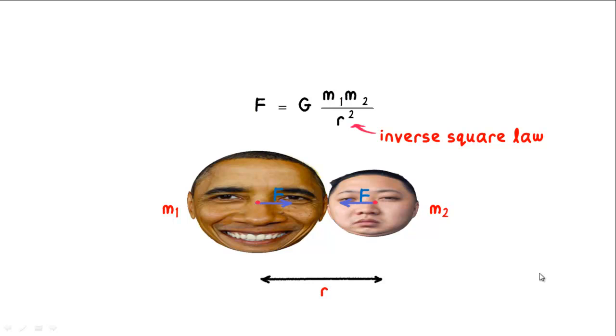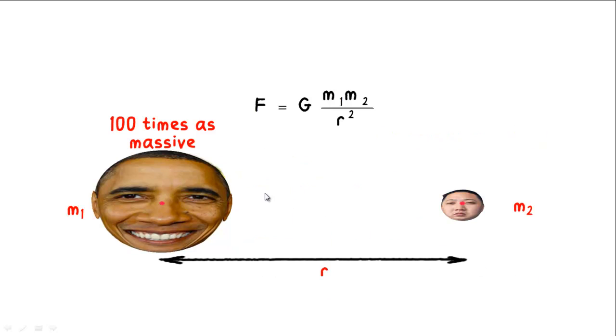Now, for the sake of discussion, let's assume that Obama's ball is 100 times as massive as Kim Jong-un's. In that case, is the gravitational pull that Obama exerts on Kim Jong-un going to be 100 times the pull that Kim Jong-un exerts on Obama?